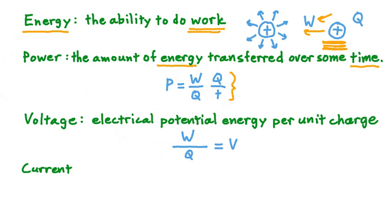Notice that just as in the voltage equation we see work divided by charge, so in our equation for power we have a W divided by Q term. That means in the equation for power, we can replace W divided by Q with V, voltage.